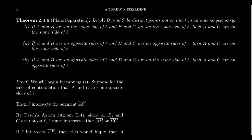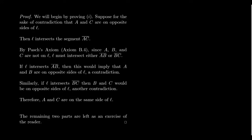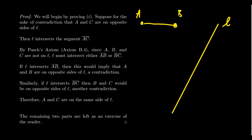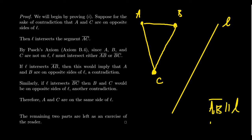So we're going to prove statement one. We have some line L, and by assumption, A and B are on the same side, so the line segment AB does not intersect L. We're also assuming B and C are on the same side, so segment BC does not intersect L. Now let's consider the line segment AC. We're going to prove this by contradiction: we're going to suppose that in fact AC intersects L — that AC is not parallel to L. So there's some point of intersection there.